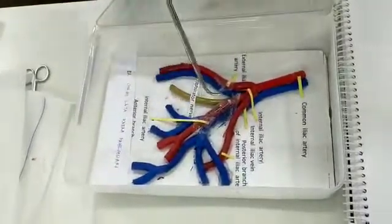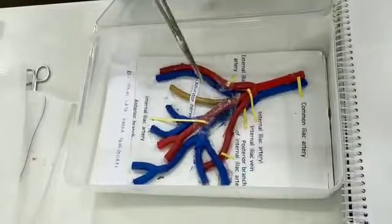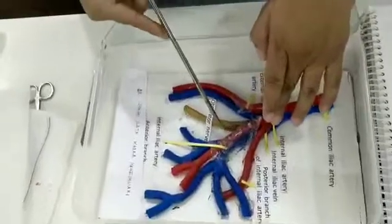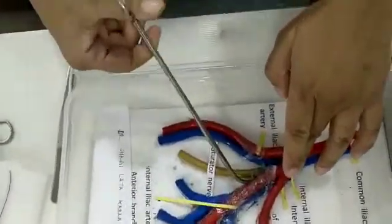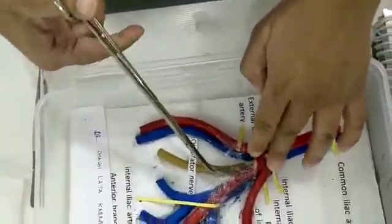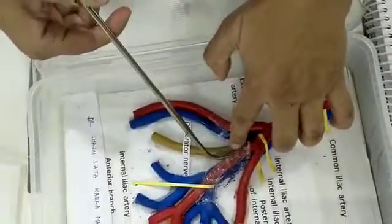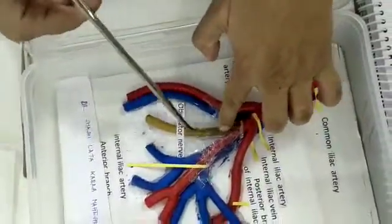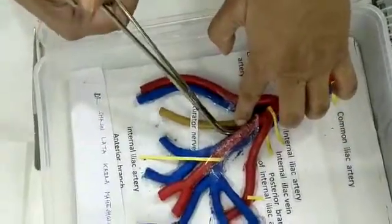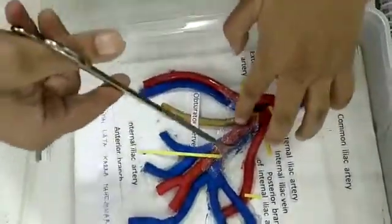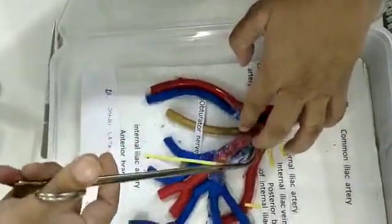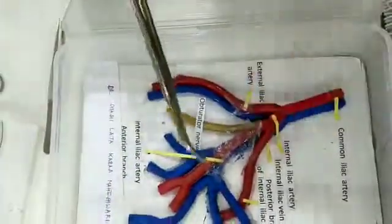I make a space only at the place where I have to introduce the right-angle forceps. This is how I do it - I do this dissection here and on the other side also. Then my assistants keep this here.